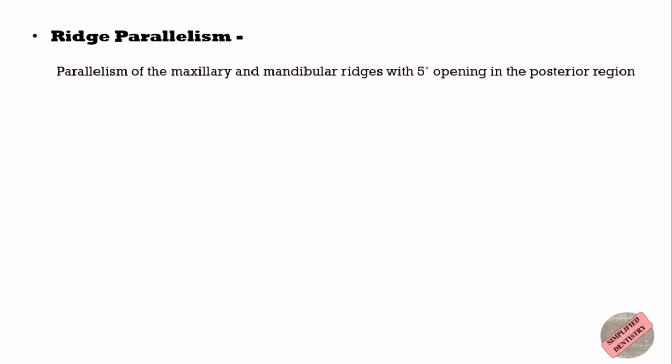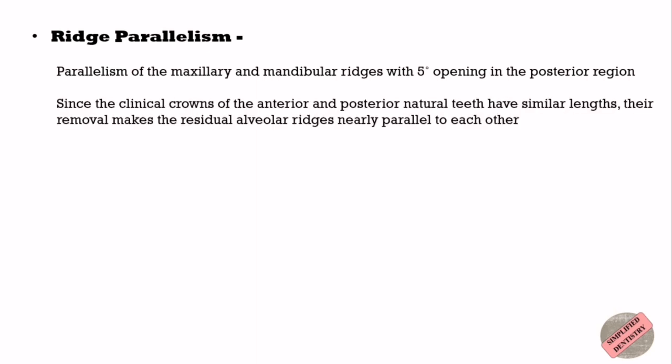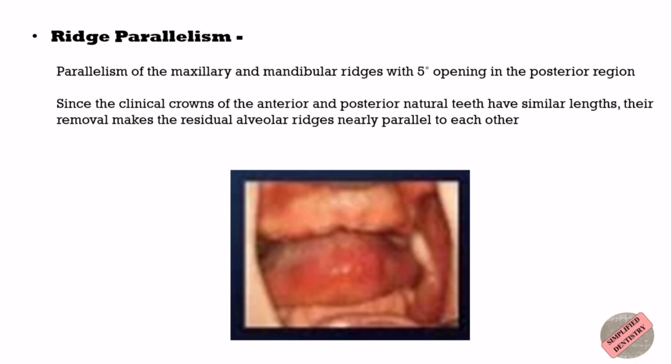The second ridge relation is ridge parallelism. Parallelism of the maxillary and mandibular ridges with a five-degree opening in the posterior region provides a guide of appropriate vertical dimension. Since the clinical crowns of the anterior and posterior natural teeth have similar lengths, their removal makes the residual alveolar ridges nearly parallel to each other. However, in most people teeth are lost at different times, and when a person finally becomes edentulous the residual ridges may no longer be parallel. The second mechanical method is using pre-extraction records, which can be prepared prior to extraction and used as a guide to verify the vertical dimension of occlusion during fabrication of complete dentures.